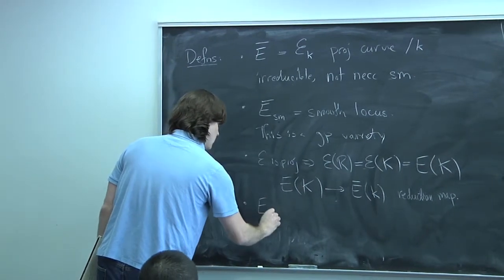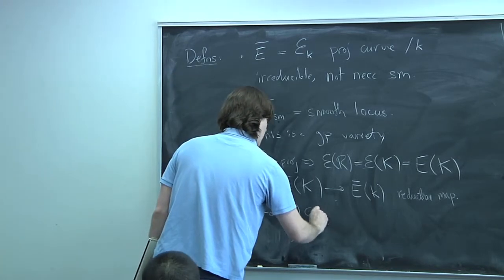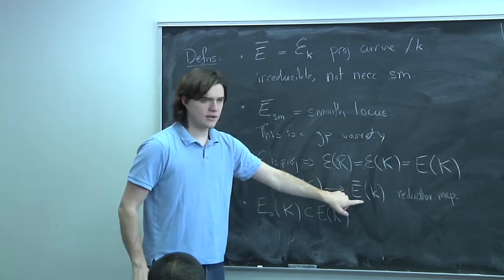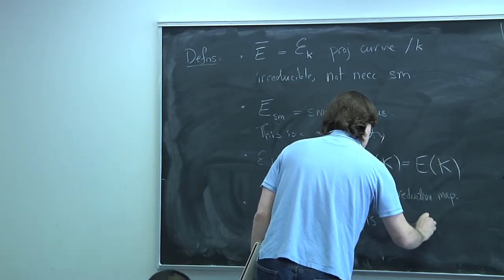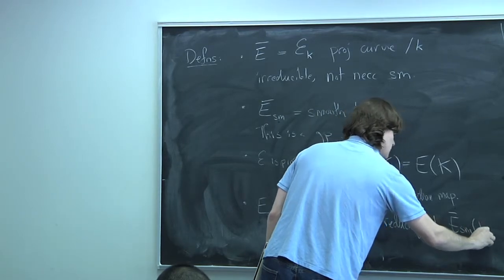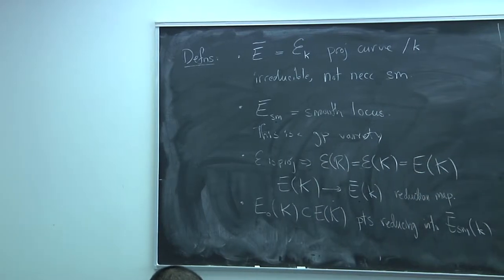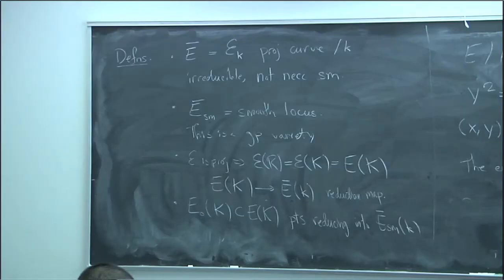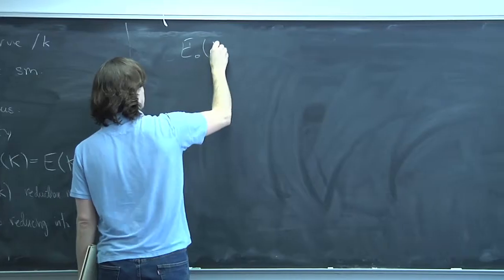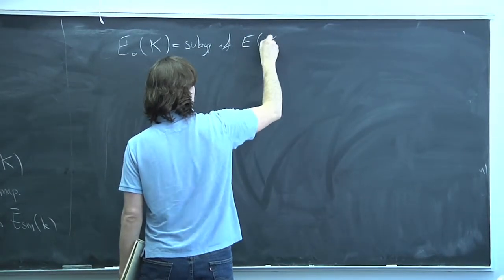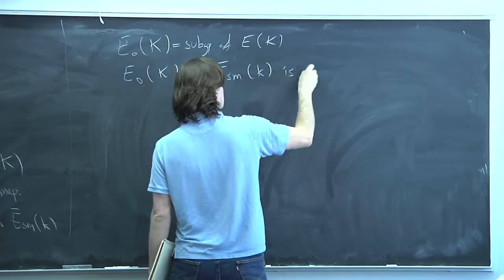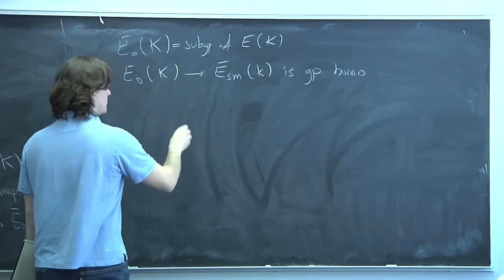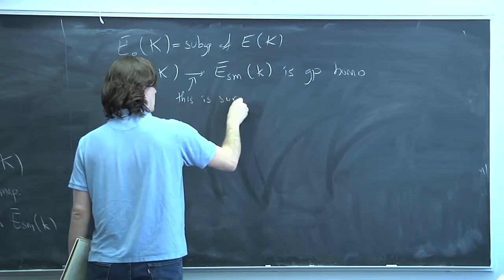I'm going to let E₀(K) be the subset of E(K) consisting of those points whose reduction lands inside the smooth locus. This subset is a subgroup, and the reduction map from E₀ is a group homomorphism. Furthermore, it's surjective — that's just Hensel's lemma. If we have a smooth point downstairs, we can lift it up.